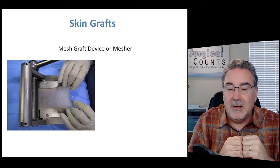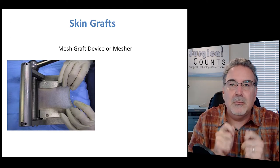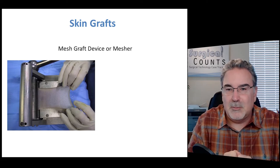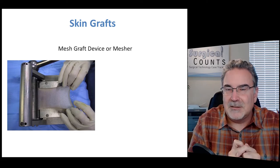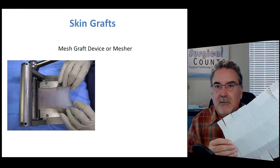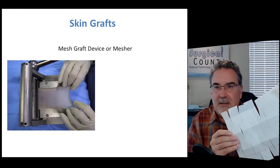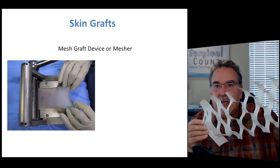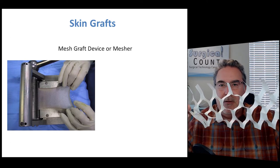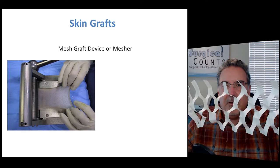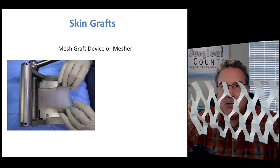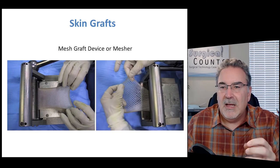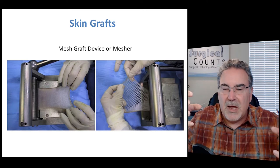Using the mesher, we can take a smaller piece of skin graft and stretch it to cover a larger area — especially important when a patient has large burns and we want to use skin as efficiently as possible. The mesher cuts little holes in the skin so it can be stretched over a larger area, and you can see how the skin comes out of the mesher with all these little holes that allow it to be expanded.